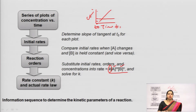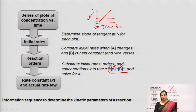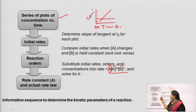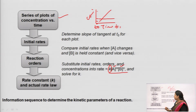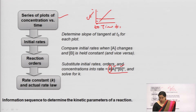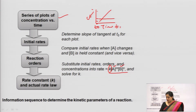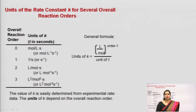These are the information sequences to determine the kinetic parameters of a reaction: first, run a series of experiments; then identify initial rates; then determine reaction orders to put in place of M and N; then obtain the rate constant and the actual rate law.